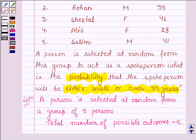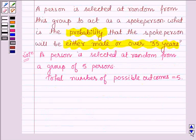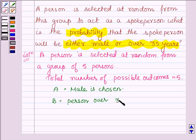Now let us denote A by the event that male is chosen and B by the event that person over 35 years is chosen.